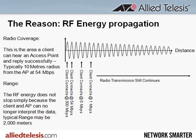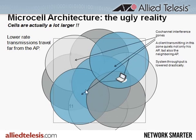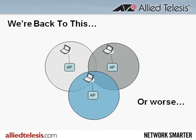So, for example, let's take a look at the channel 11 cells. When AP3 signals client 3, the AP5 cell and the AP7 cell hear the transmission and must wait. The same effect happens to the channel 1 cells, shown in white, and also to the channel 6 cells, shown in gray. So in our example, instead of the throughput of 9 cells, we're effectively back to the throughput of 3 cells — or actually even lower — as devices and APs fight for airtime and retries fill the air instead of actual data.